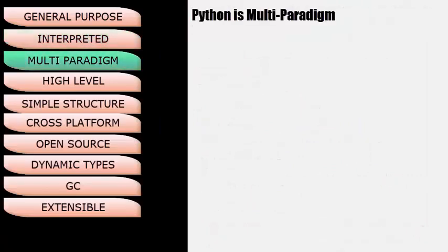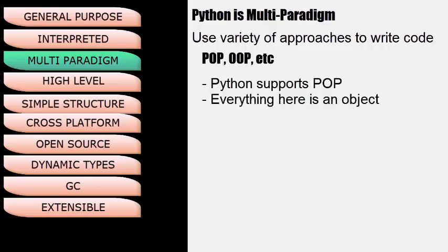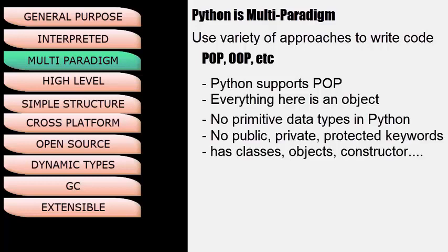Next, Python is Multi-Paradigm. This means we can write code using a variety of approaches such as POP, OOP, etc. Though Python supports procedure-oriented programming, everything here is an object, and there are no primitive types. The language has no public, private, or protected keywords, and so cannot be considered fully object-oriented programming. However, it has classes, objects, and likewise features of OOP.